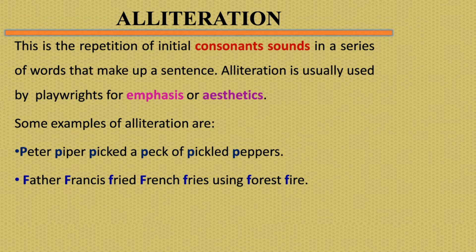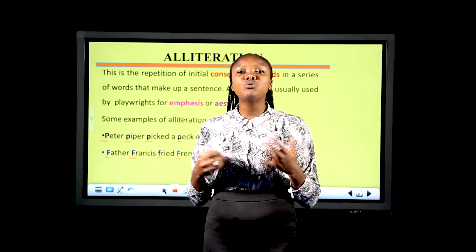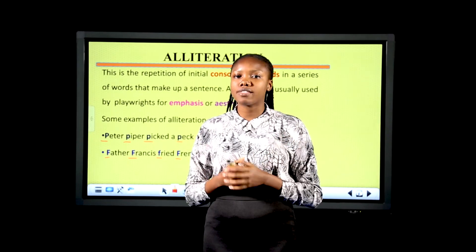Alliteration is the repetition of the initial consonant sounds in a series of words in a sentence. For example: 'Peter Piper picked a peck of pickled peppers' — the consonant P is repeated in every word. Another example: 'Father Francis fried French fries using forest fire.' Playwrights usually use alliteration to make emphasis and beautify their work.